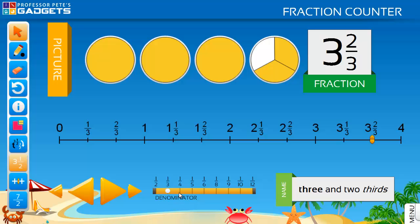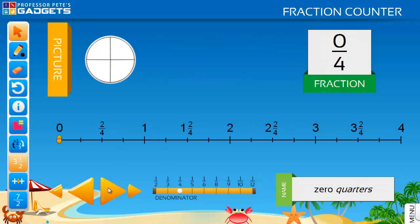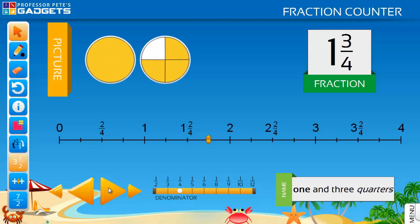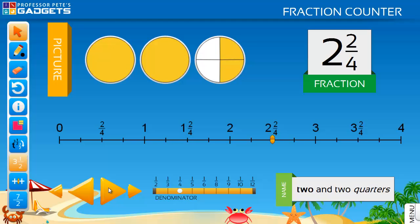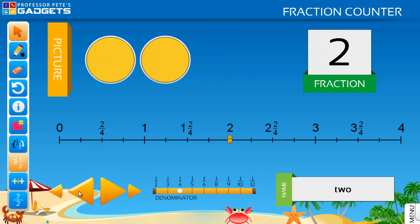Firstly, choose a denominator to count in and then follow along with the pictures and the number line. The shapes animate as the fractions progress, showing an accurate representation of the mixed numbers. Count along forwards and backwards by the selected fraction, taking note of the regrouping that happens when you reach each whole number.